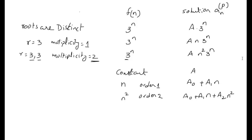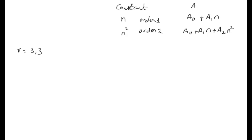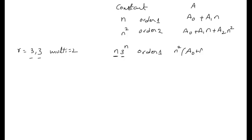Using this information we can find further particular solutions. For roots equal to 3, 3 and F(n) = n·3^n: the multiplicity is 2 and n represents a polynomial of order 1. So the particular solution includes n² due to multiplicity 2, giving (a₀ + a₁·n)·n²·3^n, written as (a₀ + a₁·n)·n²·3^n.